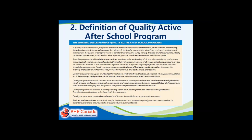The CASP definition of a quality active after-school program is the first national document describing in detail what constitutes quality programming. Essentially, a quality active after-school program is evidence-based and provides an intentional, child-centered, community-based, and needs-driven environment for children. It begins the moment the school day ends and continues until the parent or caregiver resumes care. It is led by caring, trained, and skilled adults, ideally supported by mentored youth leaders, who together provide a safe environment for children to grow. A quality program provides daily opportunities to enhance the well-being of all participants and ensure their physical, social, emotional, and intellectual development. A variety of physical activity is provided every day for at least 30 minutes, at moderate to vigorous intensity, age and stage appropriate, and includes skill and knowledge components.